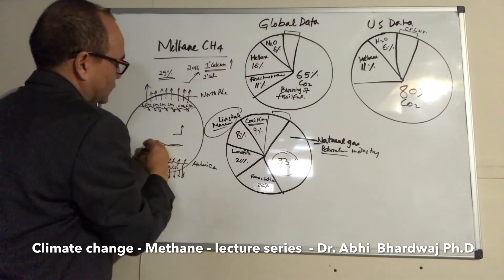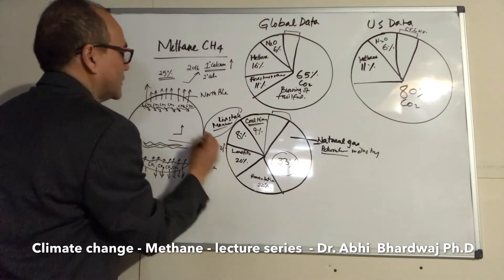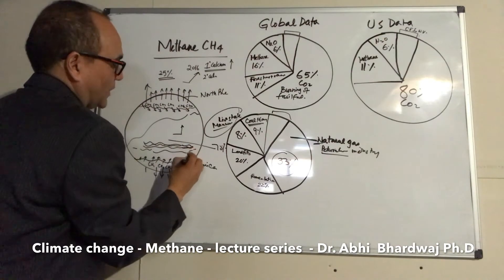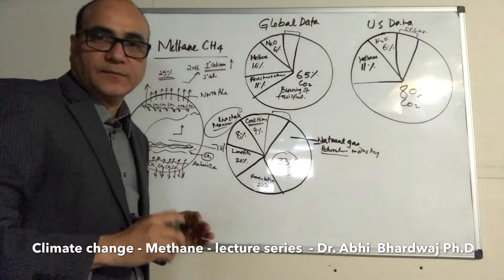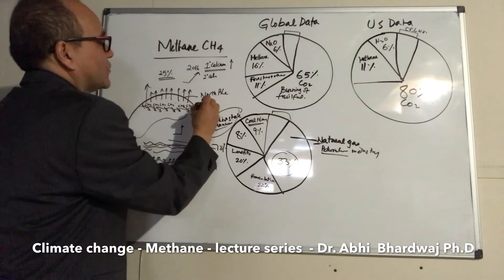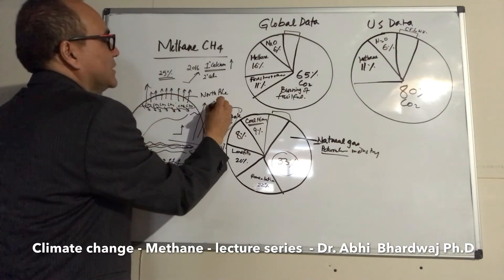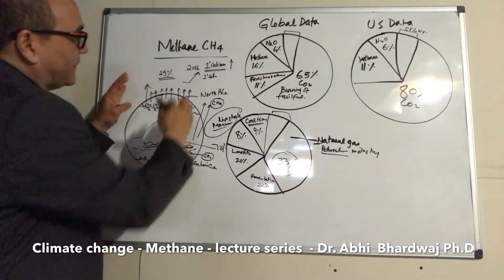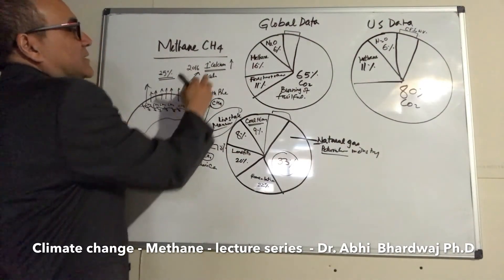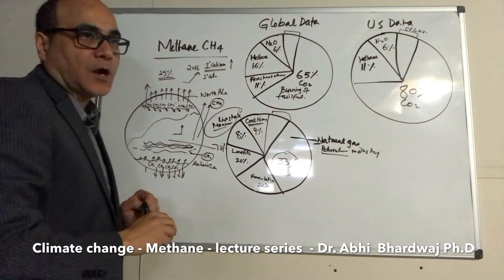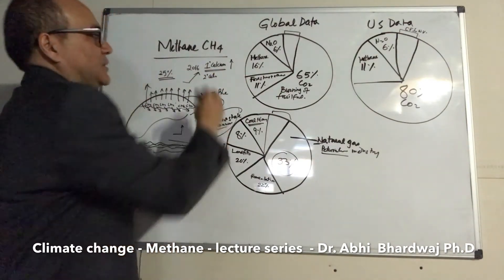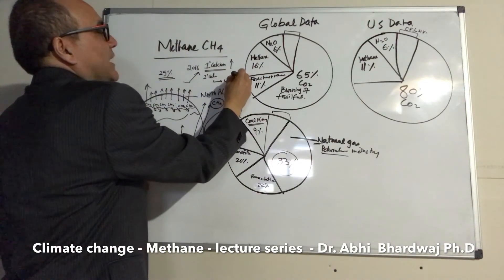Beyond that, with 70% of Earth covered by oceans, there is also a large amount of decaying organic matter on ocean floors that traps methane. As the oceans warm, they will also begin releasing that methane. So we have three major sources — North Pole permafrost, Antarctic permafrost, and ocean floors — all ready to release methane as temperatures rise. This could drive a very rapid escalation from 2 to 4 to 6 to 8 degrees Celsius.